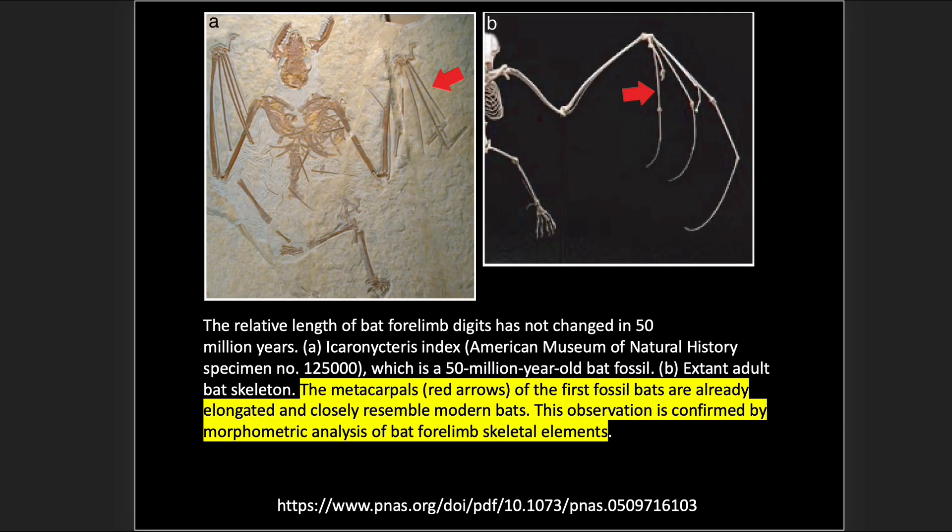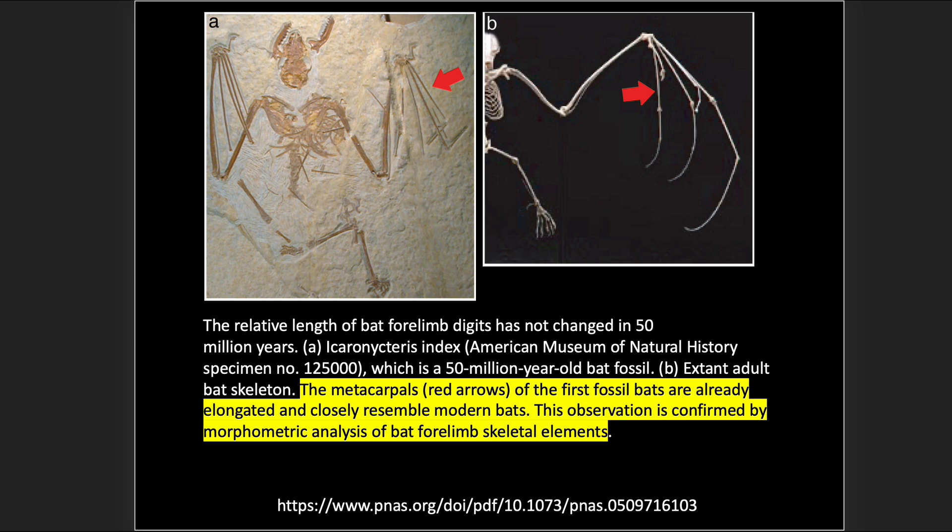Here's a figure illustrating that: on the right, an extant bat showing the elongated digits of the forelimb; on the left, a fossilized bat wing showing that same structure.